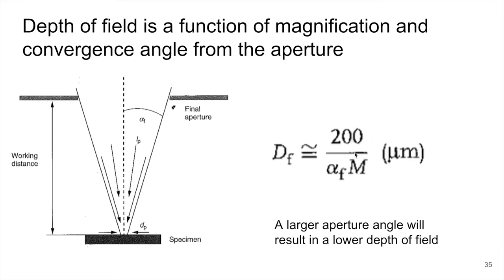So what this tells us, the conclusion of this, is that a larger aperture angle will result in a lower depth of field. And we're typically striving for a higher depth of field.